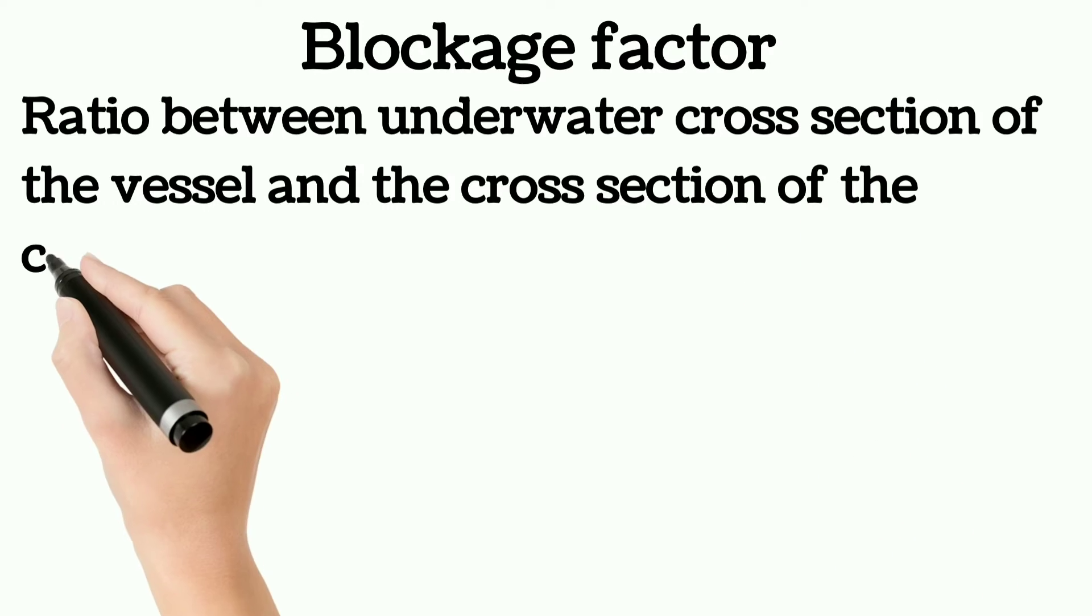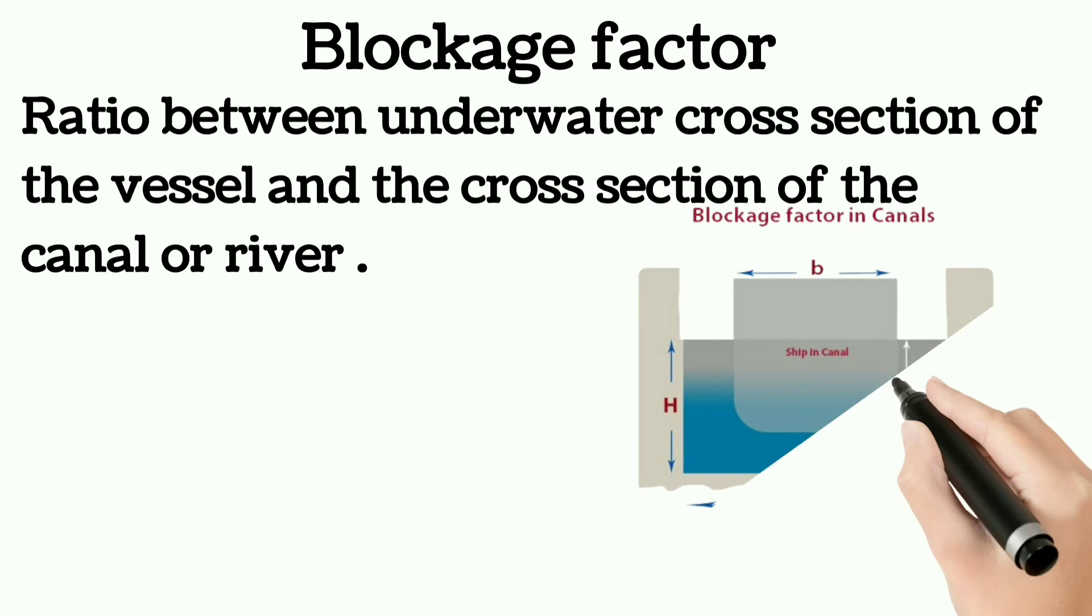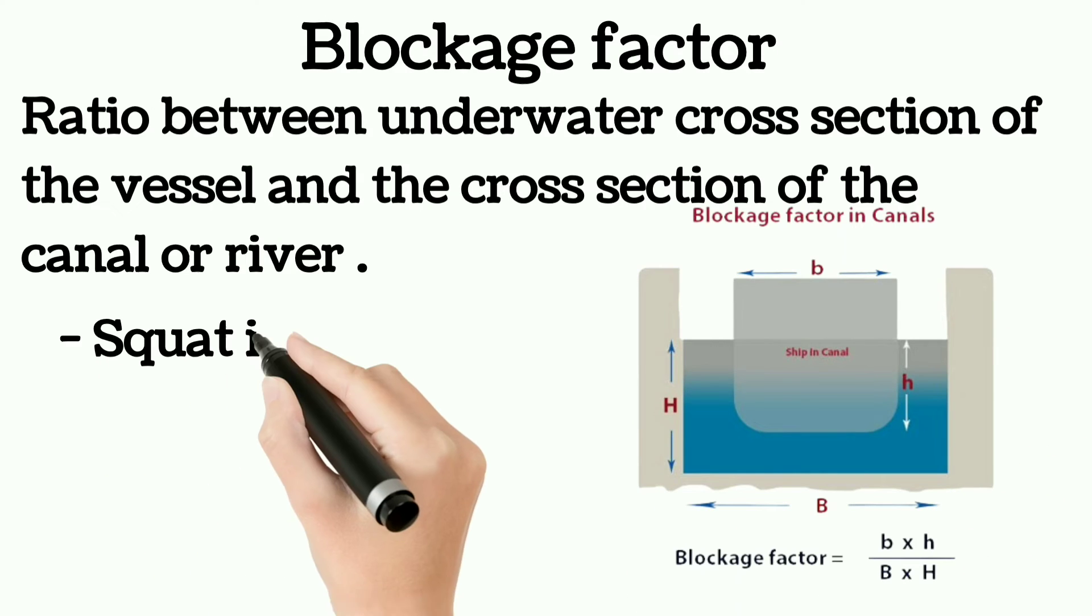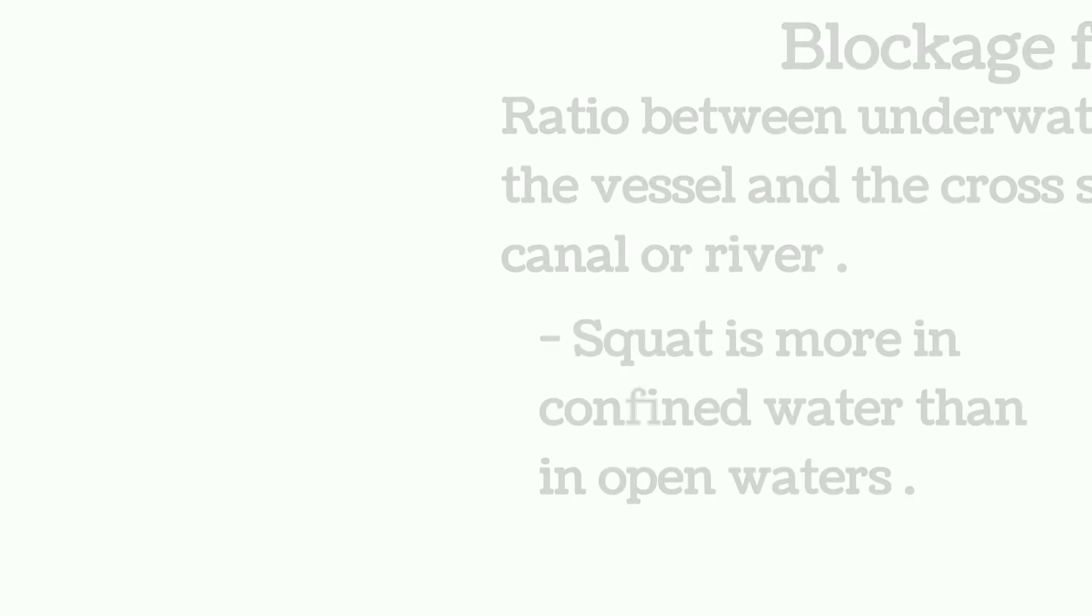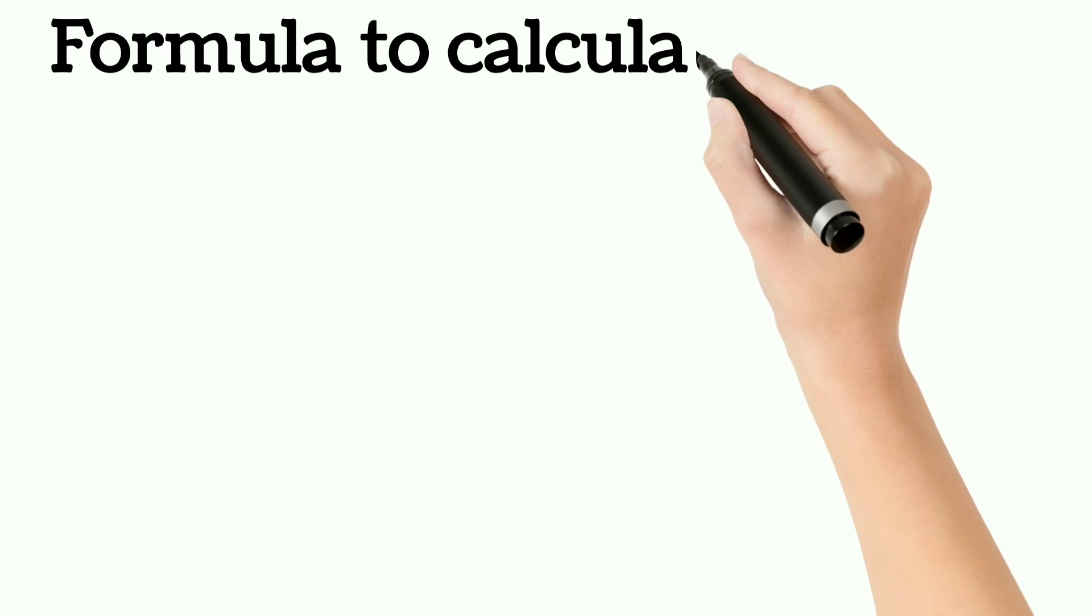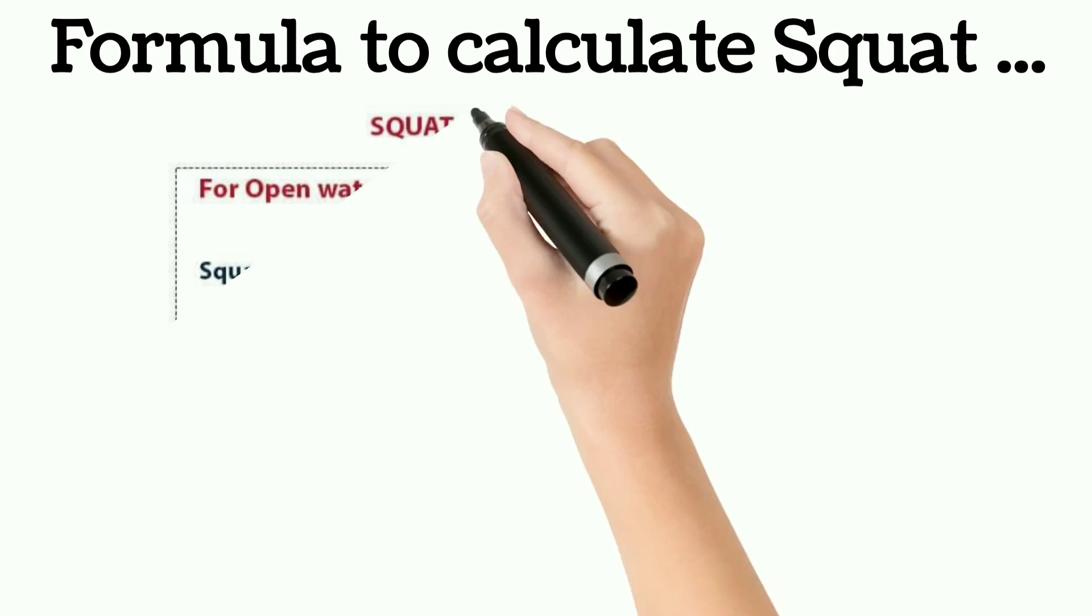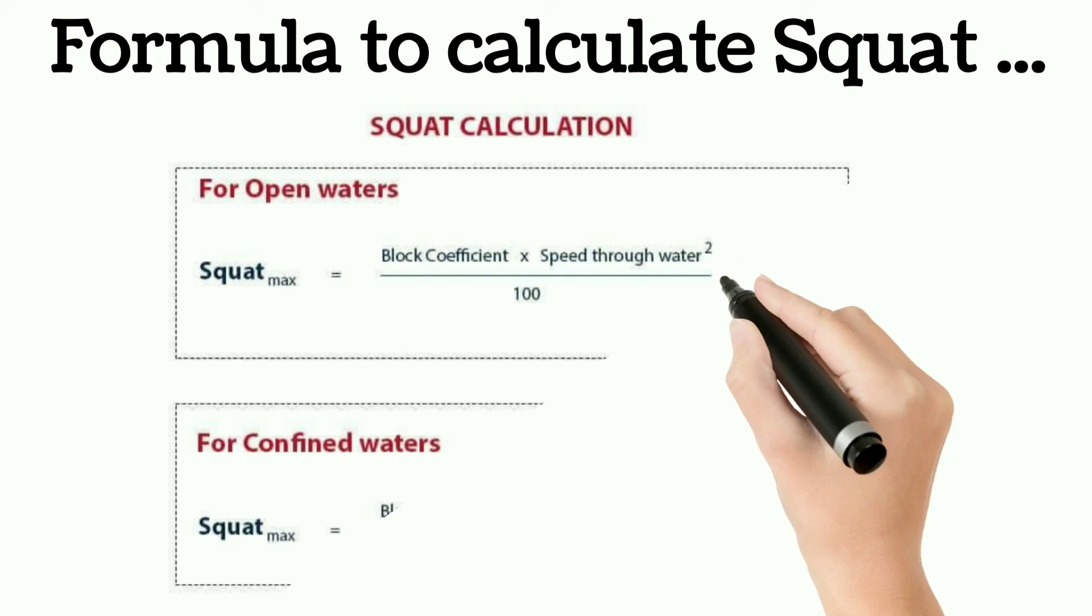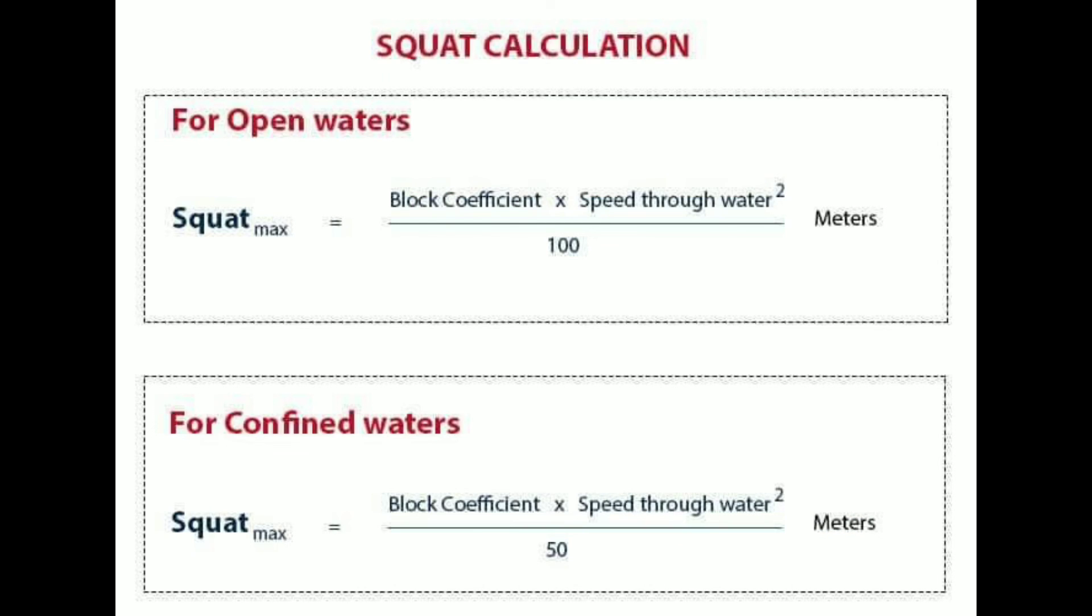As you can see in this picture, squat is more in confined water than in open water. The formula to calculate squat is given in this picture. For open water, it is block coefficient × speed² / 100, whereas for confined water it is block coefficient × speed through water² / 50.